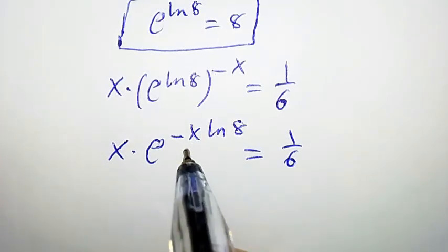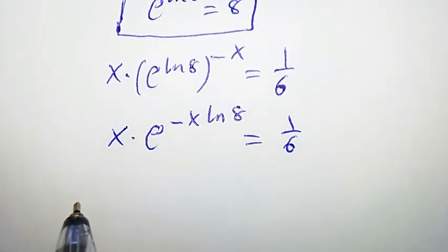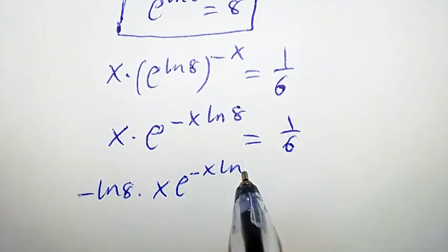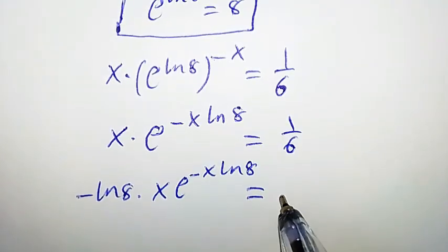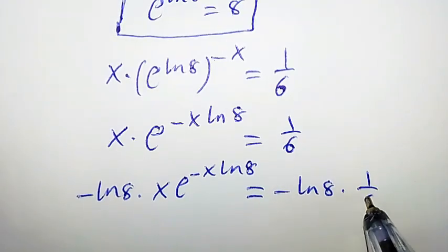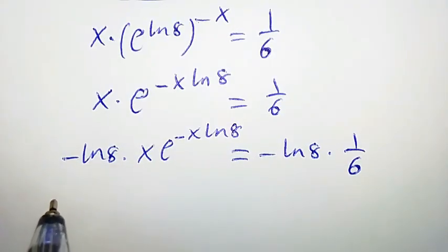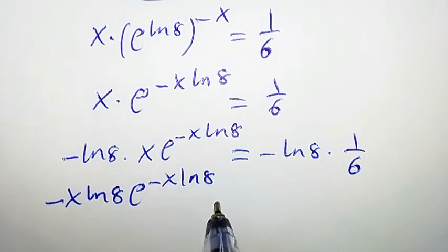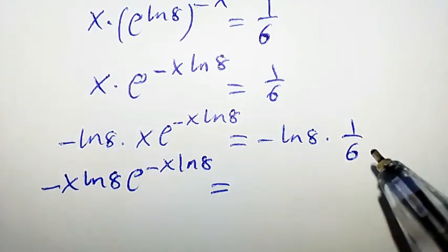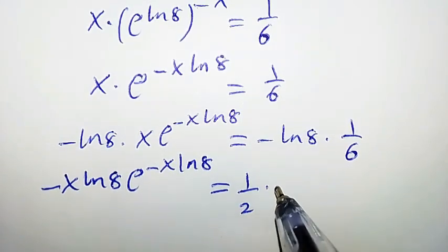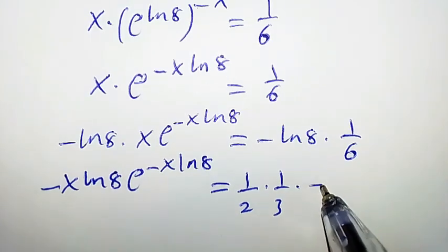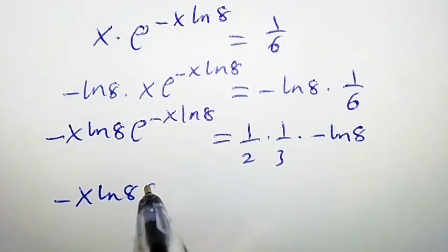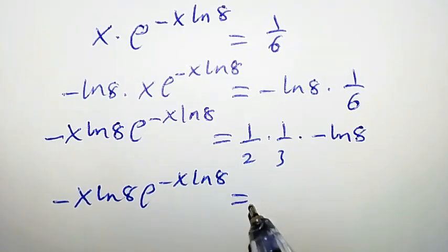To get the Lambert W form, we multiply both sides by negative ln 8, giving us negative ln 8 times x times e to the power of negative x ln 8 equal to negative ln 8 times 1 over 6. This becomes negative x ln 8 times e to the power of negative x ln 8 equal to minus ln 8 over 6.